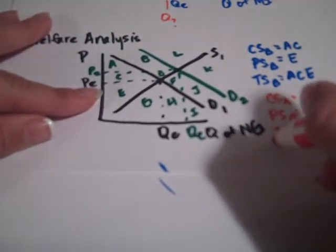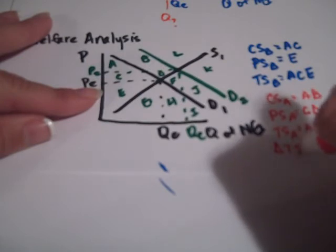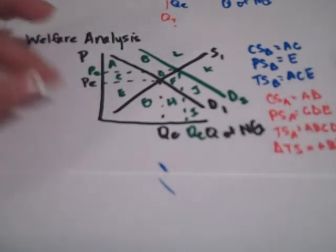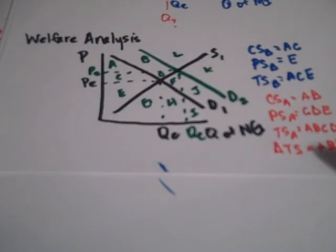Change in total surplus. What was gained? What's the difference? We actually have an addition, a positive area gained of B plus D. More are participating in the market because of the experience of the cold winter. And who in particular is better off? The producers are.